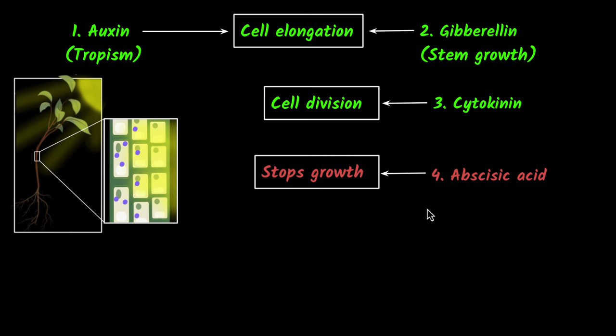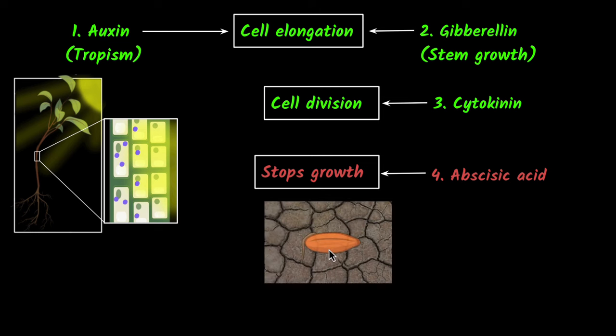Here is an example of what abscisic acid can do. Imagine you have a seed in very dry land with not much water during a drought. If that seed germinates, it doesn't get water and it'll die. So you don't want the seed to germinate. That's where abscisic acid comes in. There'll be a lot of abscisic acid which does not allow the seed to germinate.